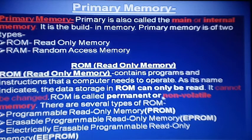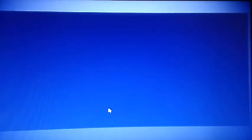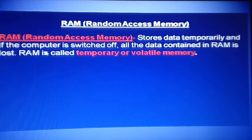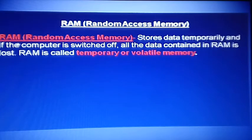ROM reads data only and is called non-volatile memory. The types are PROM, EPROM, and EEPROM. Next is RAM — Random Access Memory — which stores data temporarily. ROM stores data permanently, but RAM stores data only temporarily. When the computer is switched off, all data in RAM is deleted. RAM is also called temporary memory and volatile memory.